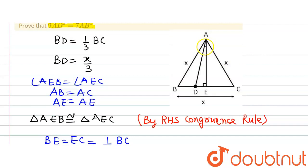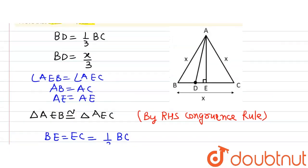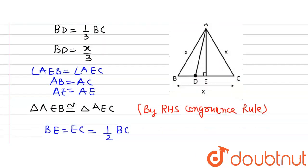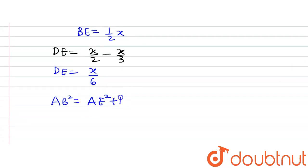Now, triangle ADE is a right-angle triangle. We will apply Pythagoras theorem in this triangle to find AD square, for which we need the value of AE. So we consider right-angle triangle AEB, where AB is the hypotenuse. By Pythagoras theorem, AB square is equal to AE square plus BE square. Pythagoras theorem states that hypotenuse square equals base square plus perpendicular square.